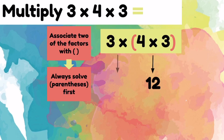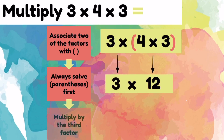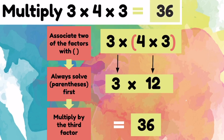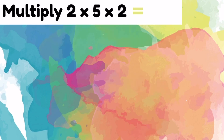Let's bring down the 3 times. Let's multiply by the third factor, which was the 3. Let's multiply 3 times 12. 3 times 12 equals 36, so 3 times 4 times 3 equals 36.